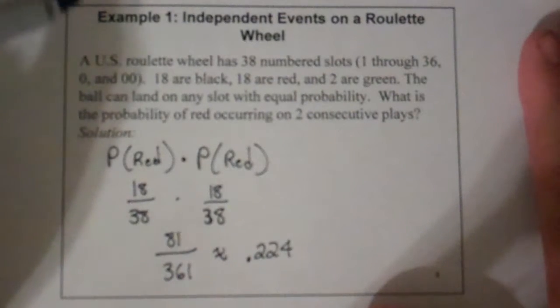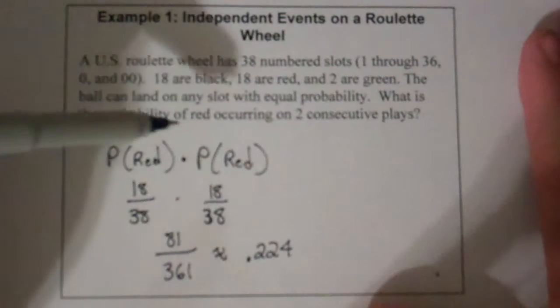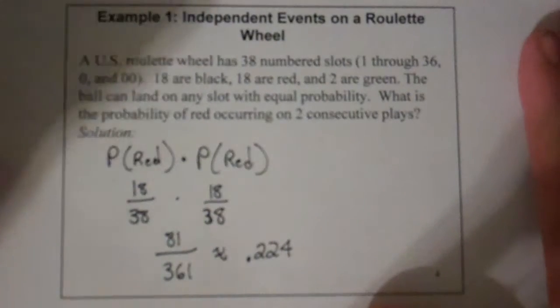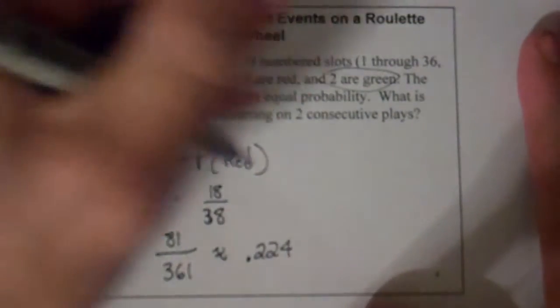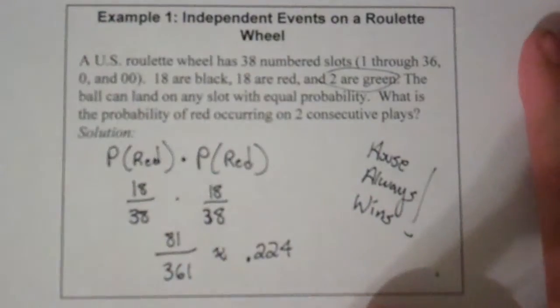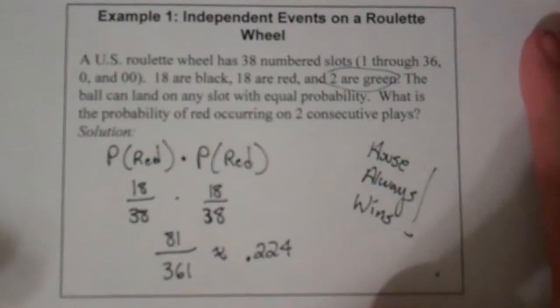Maybe a good strategy is to go red, black, red, black. But of course you do have those two greens in there, and that means the house always wins. That's the way the game is set up statistically — the house always wins in the long term. We're going to look at that in our next video.